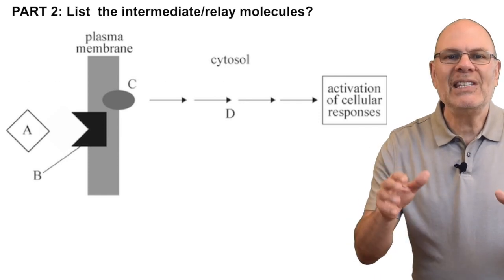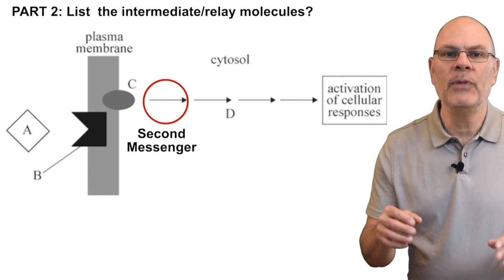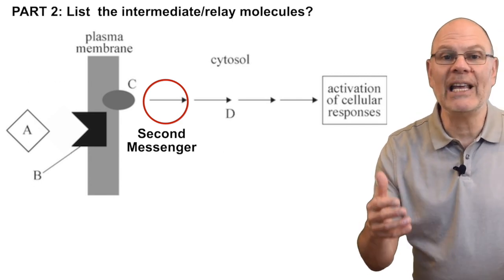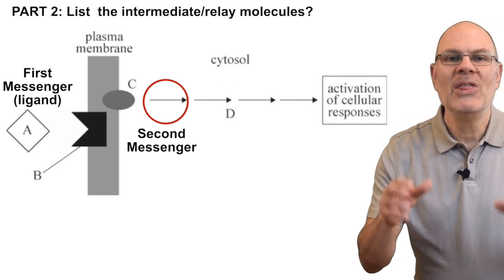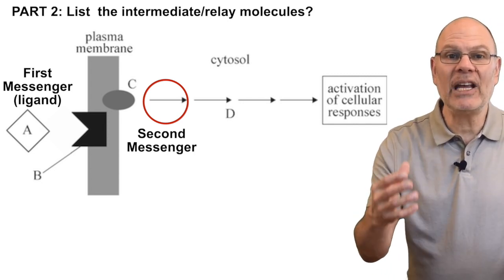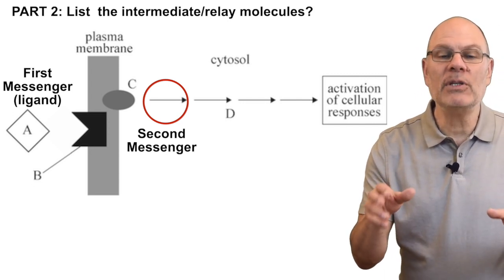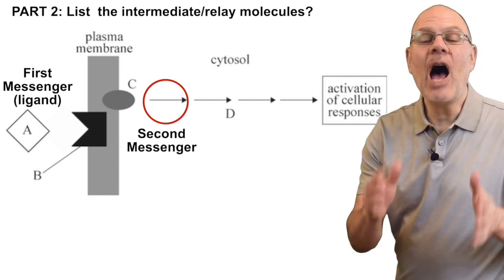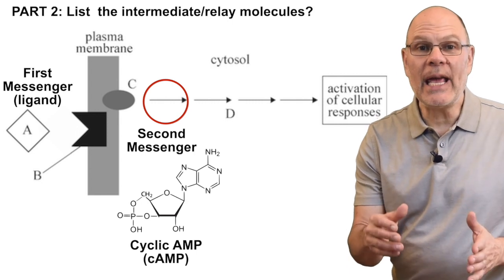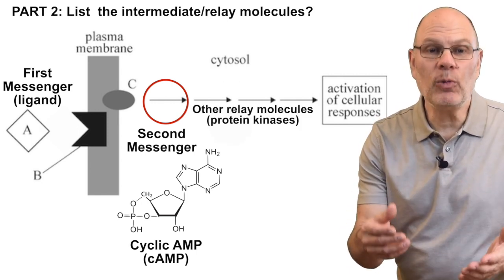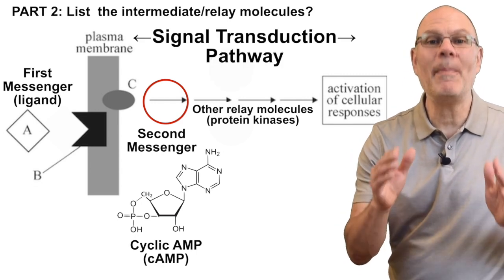Now let's look at part two. This cell communication pathway uses a second messenger system, which is very common with protein hormones like insulin. The first messenger is the ligand itself, which binds at the membrane. The second messenger is a second molecule that goes from the membrane into the cytoplasm to activate some type of cellular response. A common second messenger is cyclic AMP, or cAMP. Cyclic AMP, in turn, activates other relay molecules, such as protein kinases, creating a signal transduction pathway.